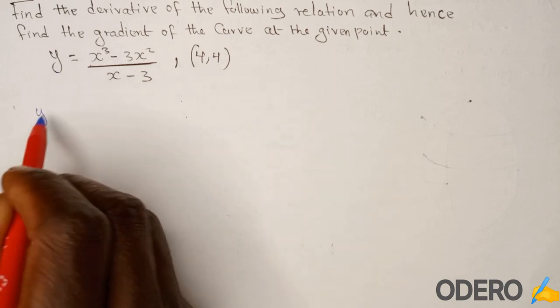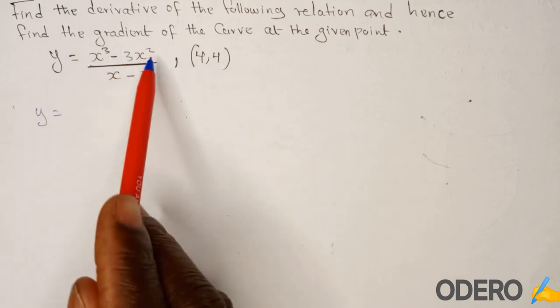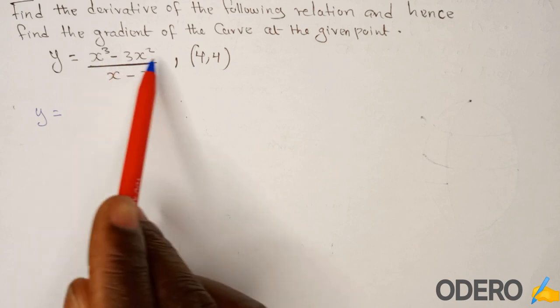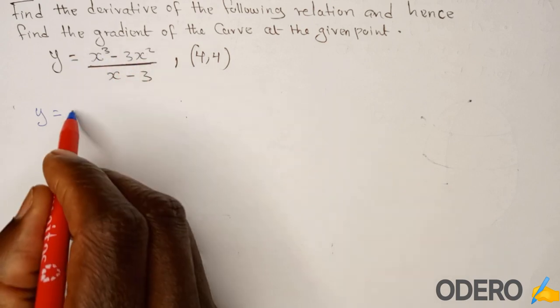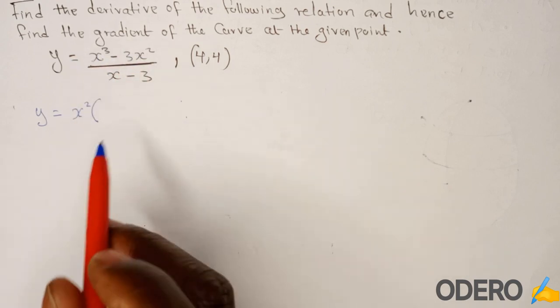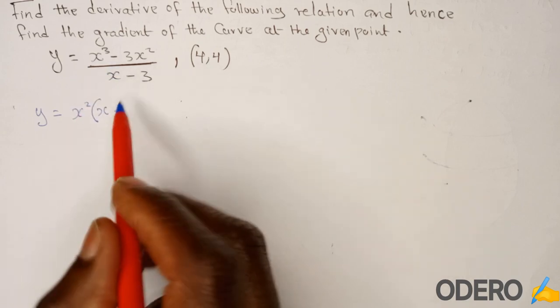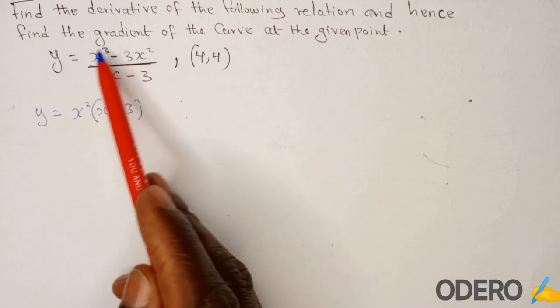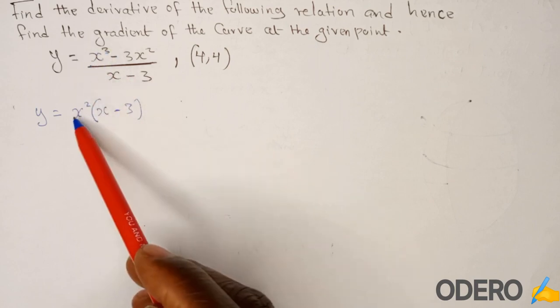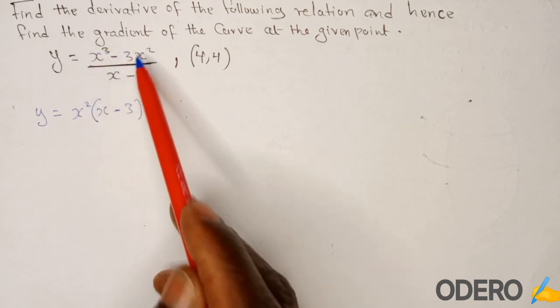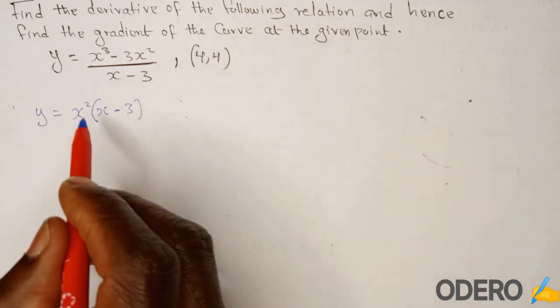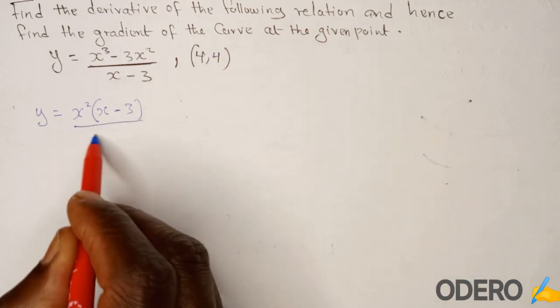So we can say y equals... You can factor out whatever is common in the numerator, so it is x squared. Inside you're going to remain with x minus 3, because x squared goes to x raised to 3. x squared goes here times 3. So down here you're just going to have x minus 3.